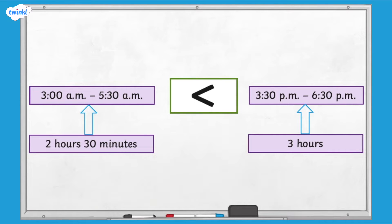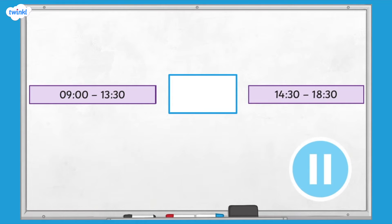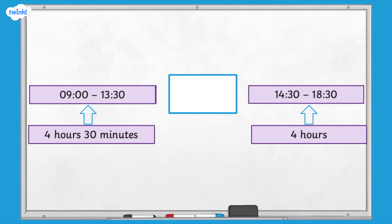I would like you to compare these two durations by using the correct inequality symbol. Pause here and have a go, and then press play again when you're ready to continue. Have you finished? Well done, here's the answer. The duration of the first activity is greater than the second activity.